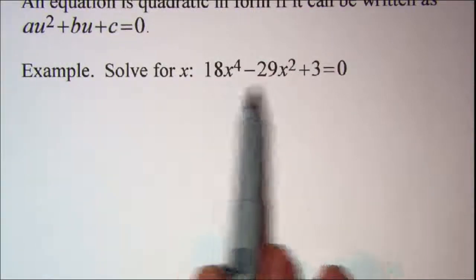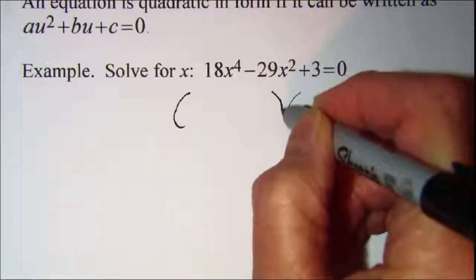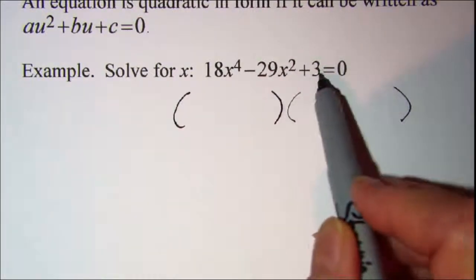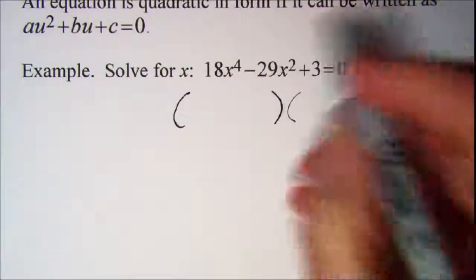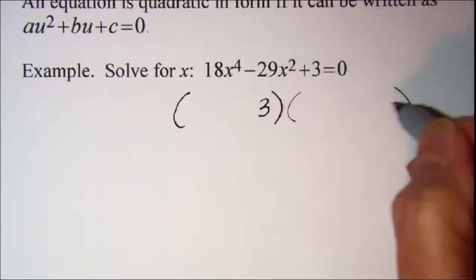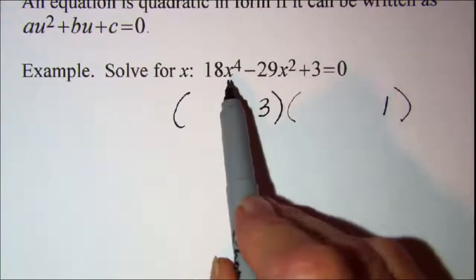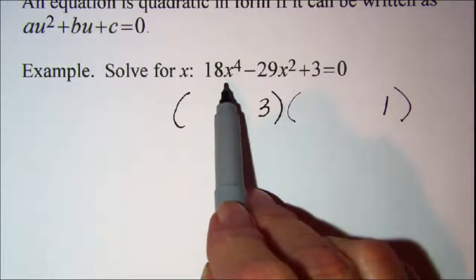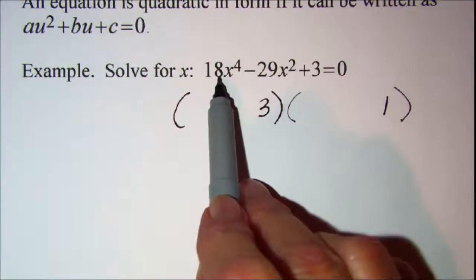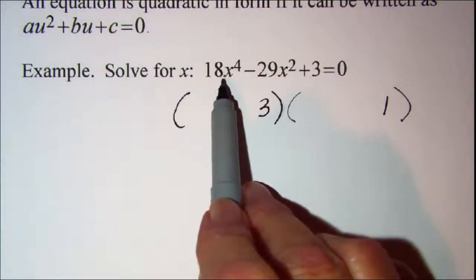I'm going to try factoring this. I can see a prime number in the back so I can use 3 times 1, pretty obvious. And then I need two numbers that multiply to give me 18. So let me try 2 times 9.